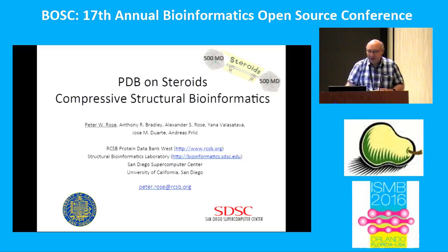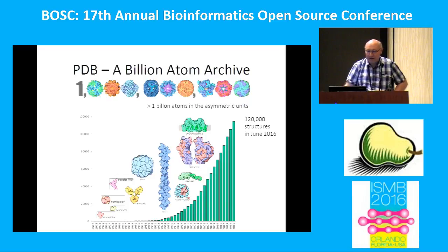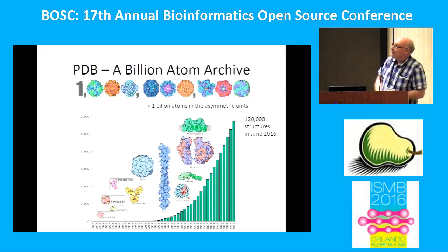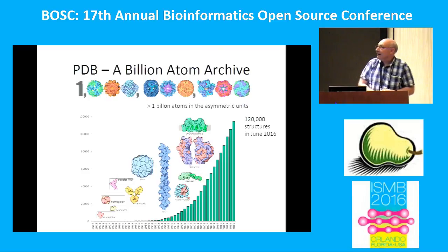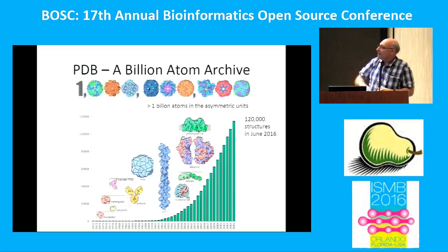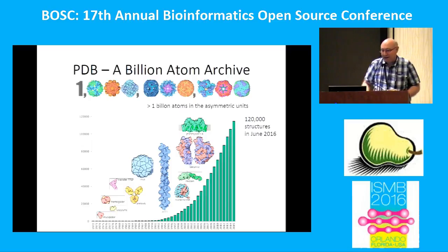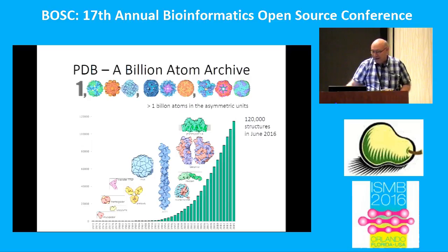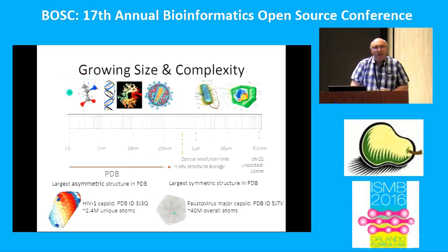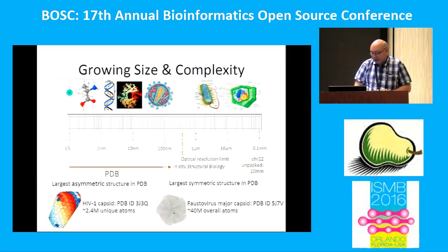We have this thing called compressive structural bioinformatics to deal with those large things. The PDB is getting larger and larger — we have more than one billion atoms in the archive, and the number of structures is also increasing almost exponentially. We now have 120,000 structures, growing by 10,000 per year. But that's not all — we also have growing complexity with larger and larger molecules.